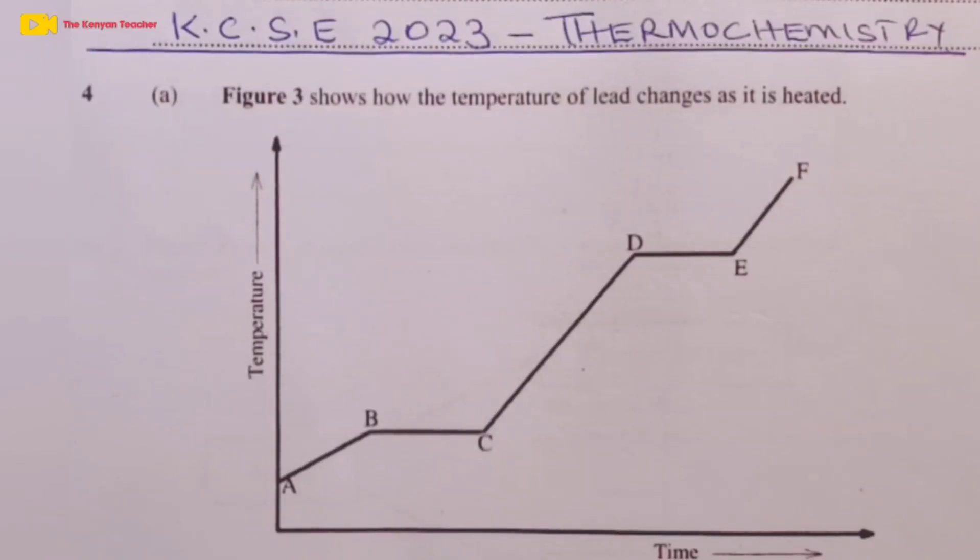A pleasure to welcome you to KCSE 2023, Chemistry Paper 2, Question Number 4. Question 4 tested on a topic in Form 4 called Energy Changes in Physical and Chemical Processes, what we usually refer to as thermochemistry.